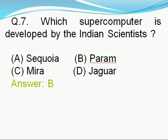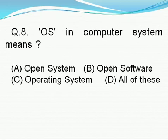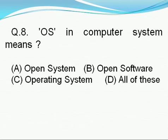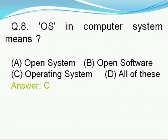Question number 8: OS in computer system means — option A: open system, option B: open software, option C: operating system, option D: all of these. Right answer is C, i.e., operating system.